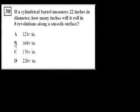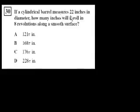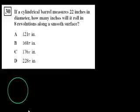Problem 31. I like these problems now that we're out of the congruencies and similars. If a cylindrical barrel measures 22 inches in diameter, how many inches will it roll in 8 revolutions along a smooth surface? We could imagine a wheel, a tire of some kind. If we look at this cylindrical barrel from the side, that's its side. They say it measures 22 inches in diameter, so this distance right here is 22.